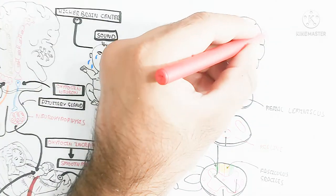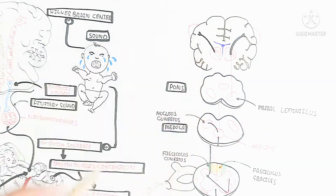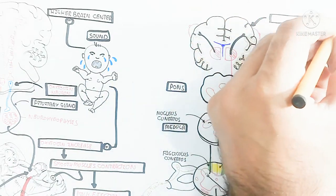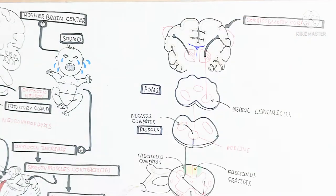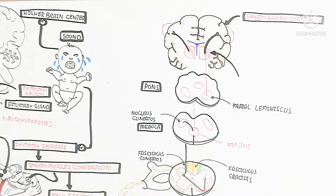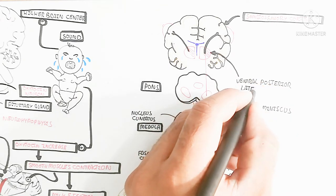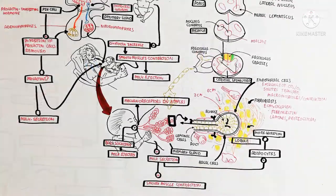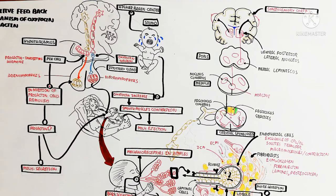The thalamus transmits the signal to the somatosensory cortex on both sides for breast sensation. The left side of the breast is controlled by the right side of the brain and vice versa. The sensation of touch from the baby's lips stimulates mechanoreceptors in the nipples, and the higher brain center then stimulates oxytocin production by the pituitary gland, completing the positive feedback mechanism.